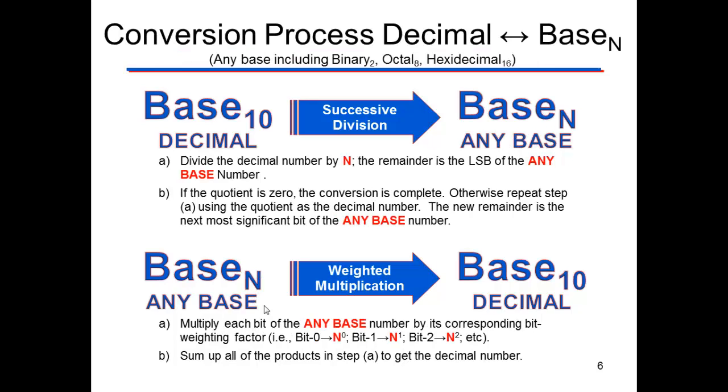We'll do the same process no matter what the base number is. To move from base 10 to any base, we divide by the base. The remainders are the numbers that will become our new number. And to move from whatever the base is to base 10, we do weighted multiplication: n to the 0, n to the 1st, and the 2nd.